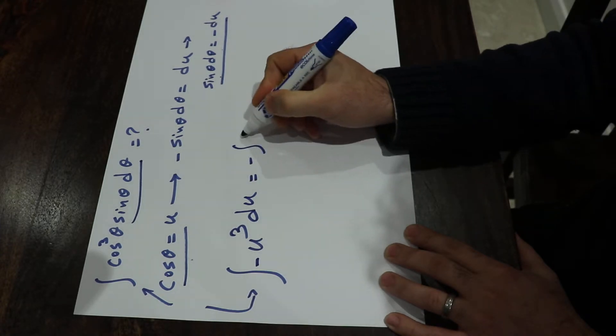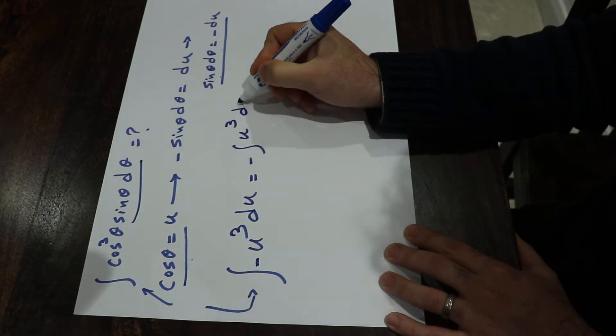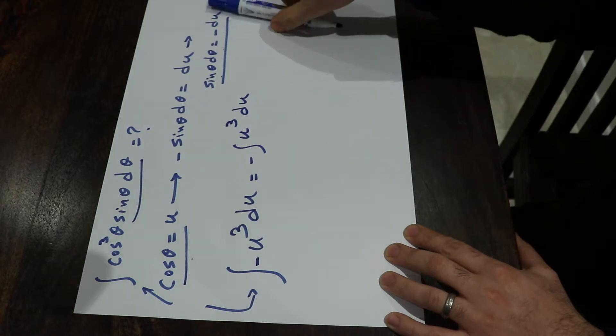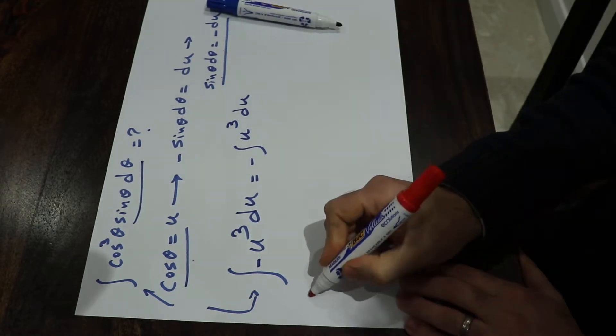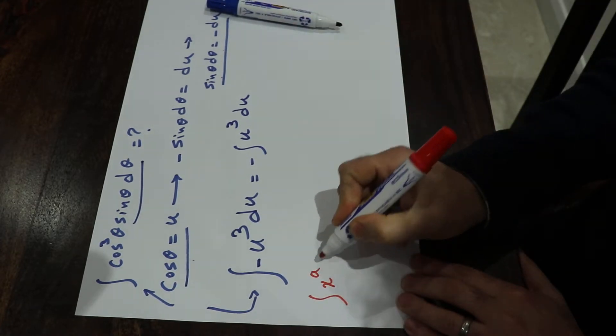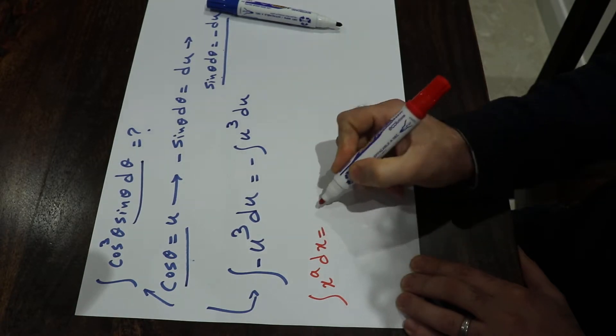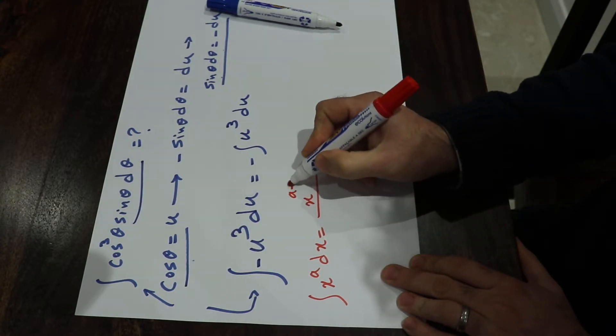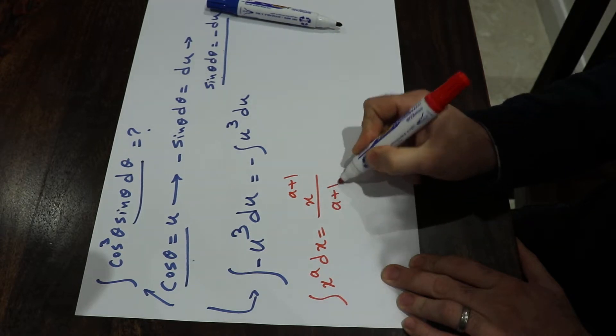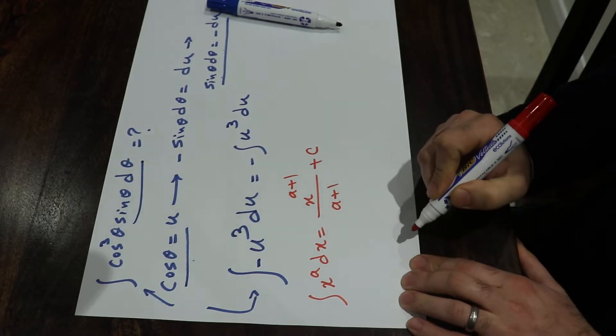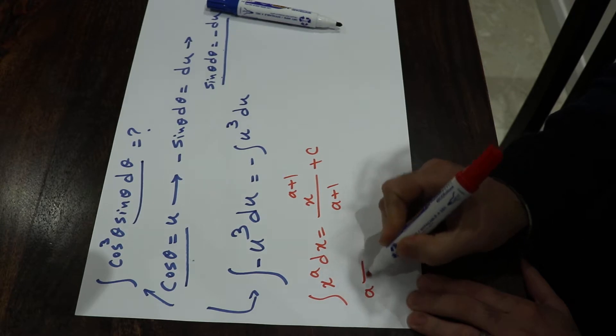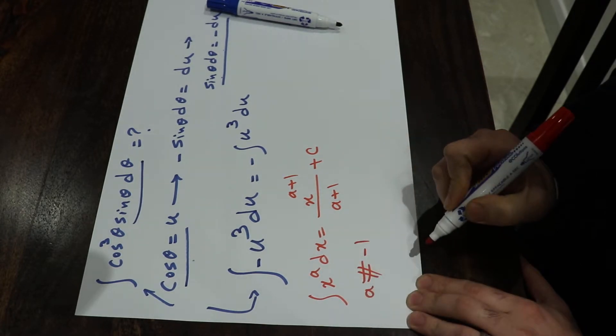To solve this integral, you need to know one formula. That is integral x with the power of a dx, which will be equal to x with the power of a plus 1 divided by a plus 1 plus c. That's the constant of the integral, assuming a is not equal to minus 1.